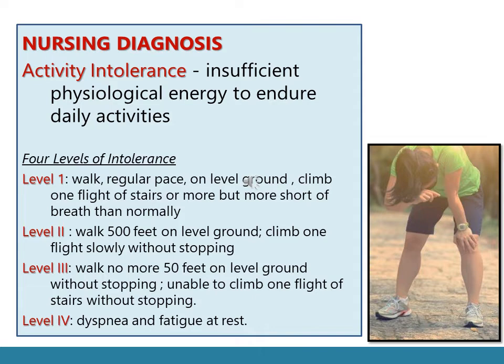Level two: the patient can walk 500 feet on level ground and climb one flight slowly without stopping. Level three: the patient can walk no more than 50 feet on level ground without stopping and is unable to climb one flight of stairs without stopping. Level four: even at rest, the patient develops dyspnea or breathing problems, and still experiences fatigue or body weakness — this is the worst level of activity intolerance.